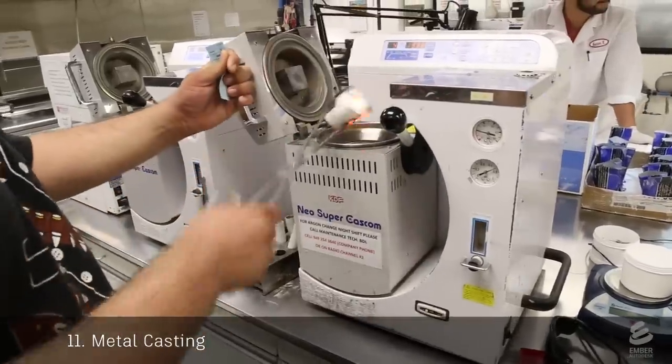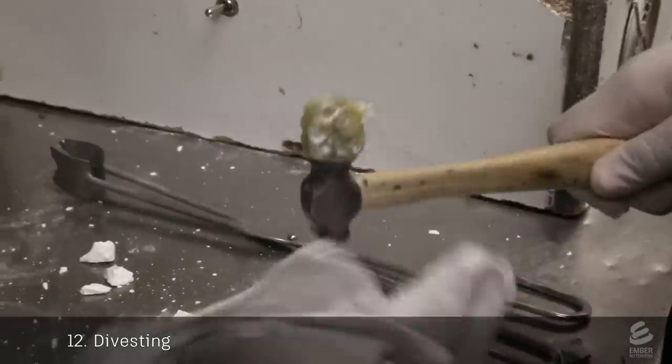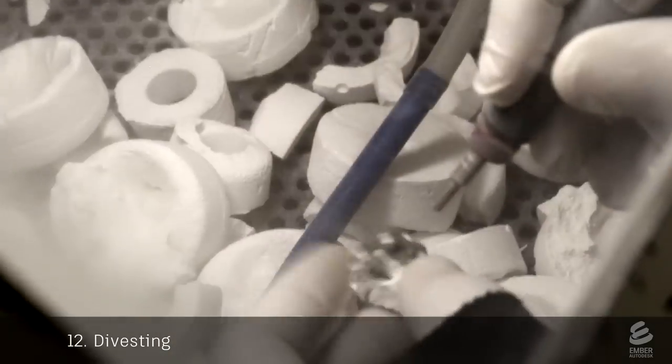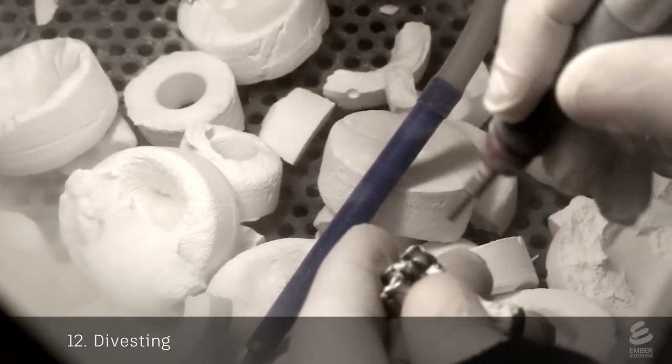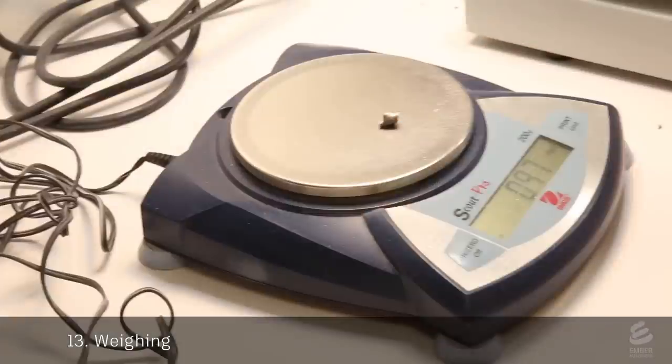The casting is removed from the machine and left to cool. In a process called divesting, a technician breaks apart the investment with a hammer and uses an air gun to remove any remaining pieces of investment. He cuts off the sprues and weighs the castings to determine the price.